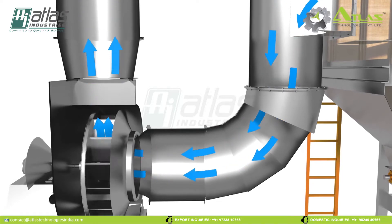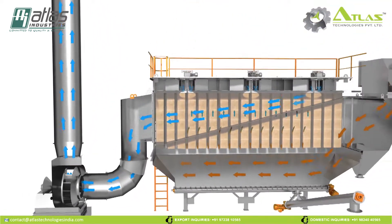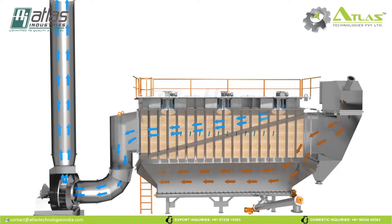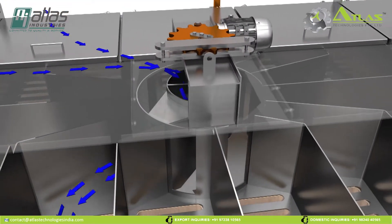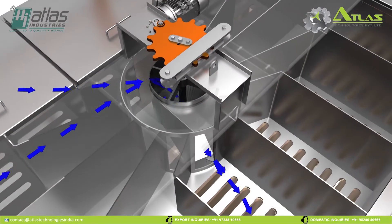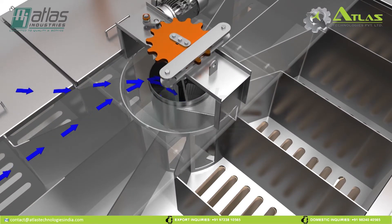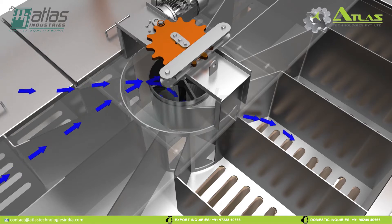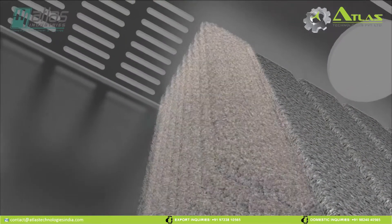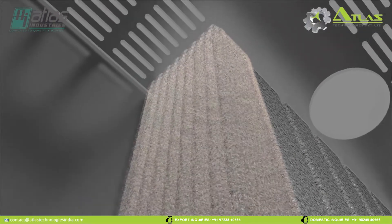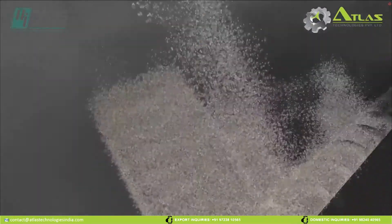The bag filter has sufficient filter bags to collect the dust. The filter bags are completely cleaned by a reverse air flow system operated by Geneva Mechanism. All the dust collected from the bag filter is carried to the dust hopper through the screw conveyor.